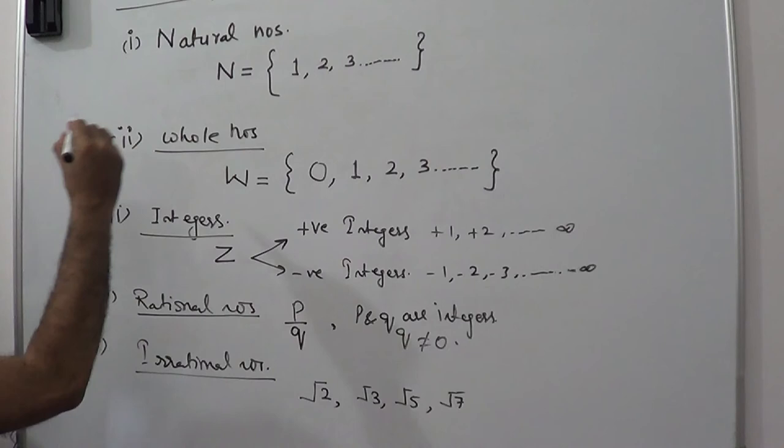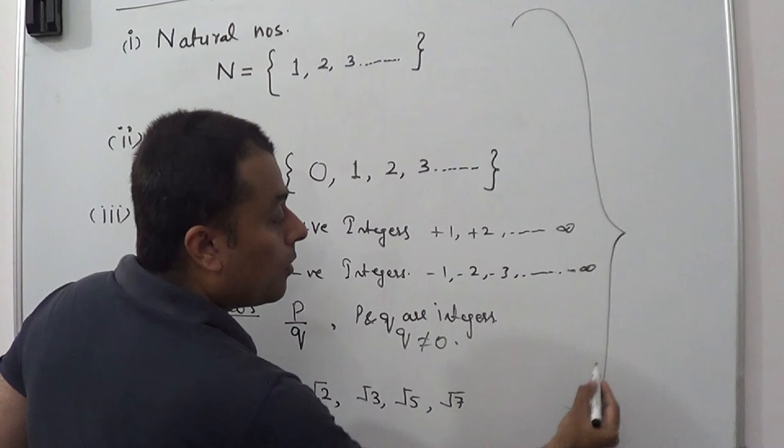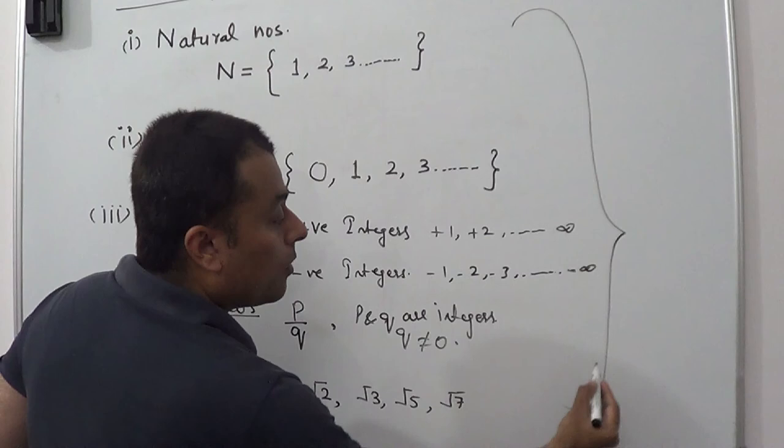And all these numbers together are known as real numbers. All these numbers are under the category of real numbers.